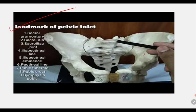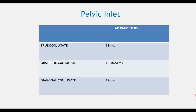The landmarks of the pelvic inlet include: the sacral promontory (1), the ala of the sacrum (2), the sacroiliac joint (3), the iliopectineal line (4), the iliopubic eminence (5), the pectineal line (6), the pubic tubercle (7), the pubic crest (8), and the pubic symphysis (9). Remember: sacral promontory, ala of sacrum, sacroiliac joint, iliopectineal line, iliopubic eminence, pubic tubercle, pubic crest — very simple.